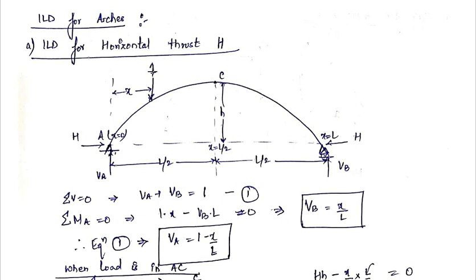In this diagram, this is your three-hinged arch, A, B, and C. C is your crown point. The total span of this arch is capital L. At each support, there will be two reactions: one horizontal thrust and one vertical reaction. So this is your capital H and VA, and this is your capital H and VB. Suppose this is your unit rolling load, which is moving from support A towards support B. At any instant of time, this rolling load is at a distance of small x from support A.